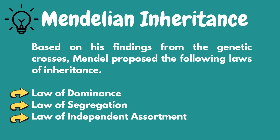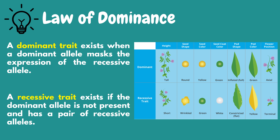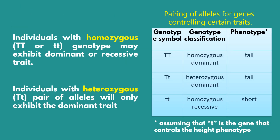The key principles of Mendelian inheritance are summed up by Mendel's three laws: law of dominance, law of segregation, and law of independent assortment. The first law is the law of dominance. It states that a dominant trait exists when a dominant allele masks the expression of the recessive allele. A recessive trait exists if the dominant allele is not present and has a pair of recessive alleles. In a heterozygous organism, one trait will conceal the presence of another trait for the same characteristics. The dominant allele will be expressed exclusively. Based on the table, whether it is homozygous dominant or heterozygous dominant, it will only express the tall phenotype. But if it is homozygous recessive, it is the only chance that it will express the short phenotype.